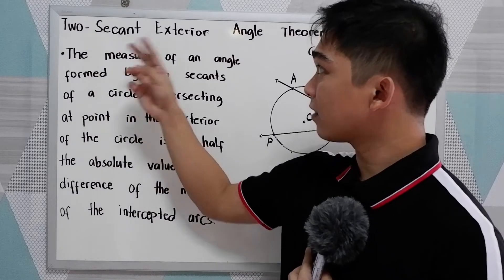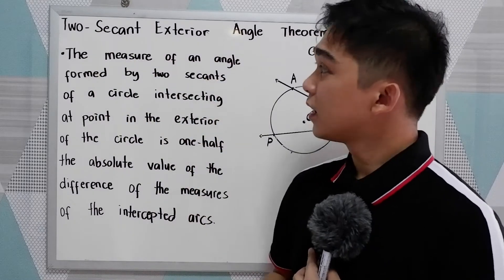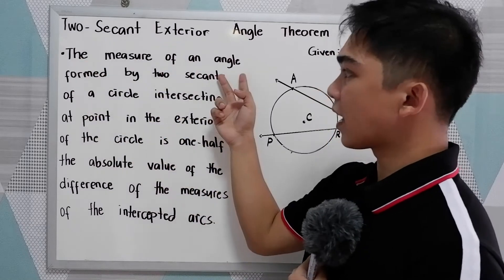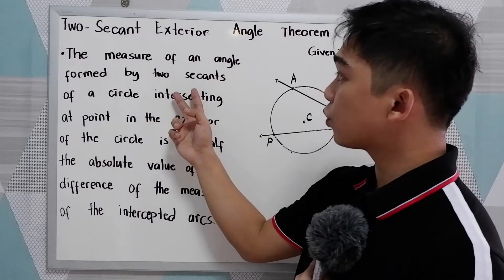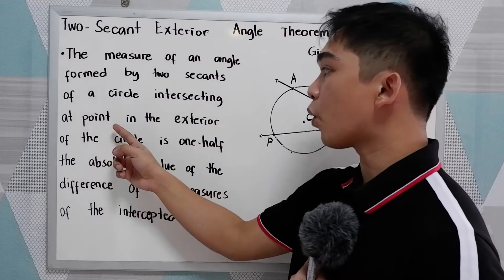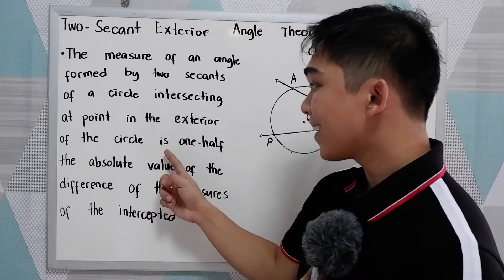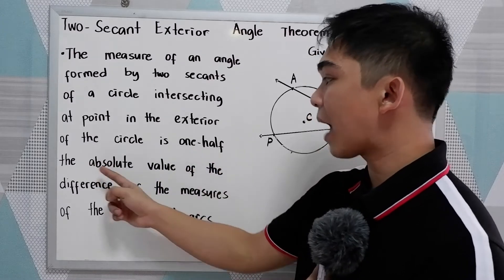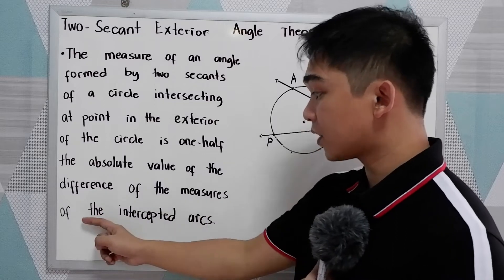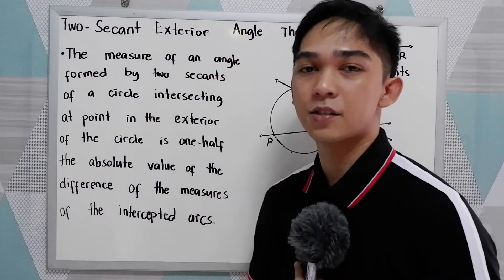This time we have the two secant exterior angle theorem. The theorem states that the measure of an angle formed by two secants of a circle intersecting at a point in the exterior of the circle is one half the absolute value of the difference of the measures of the intercepted arcs.